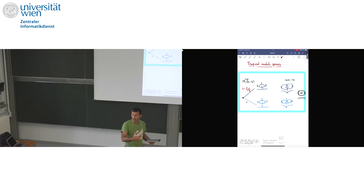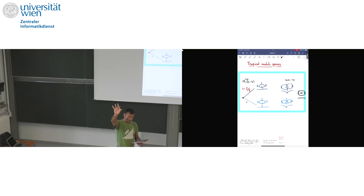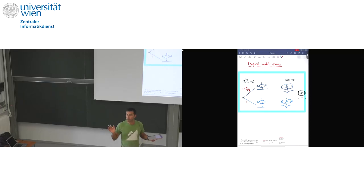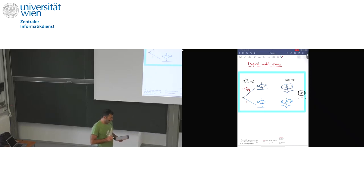For example, let's start with a moduli space of covers from a genus one curve to P1 of degree four that have two special points, zero and infinity, that are fully ramified, and the other two points are simply ramified. This is going to be one of our favorite double Hurwitz numbers. There is an open dense set inside this moduli space where these are covers from smooth curves to P1 — no problem. This is going to be dimension one.